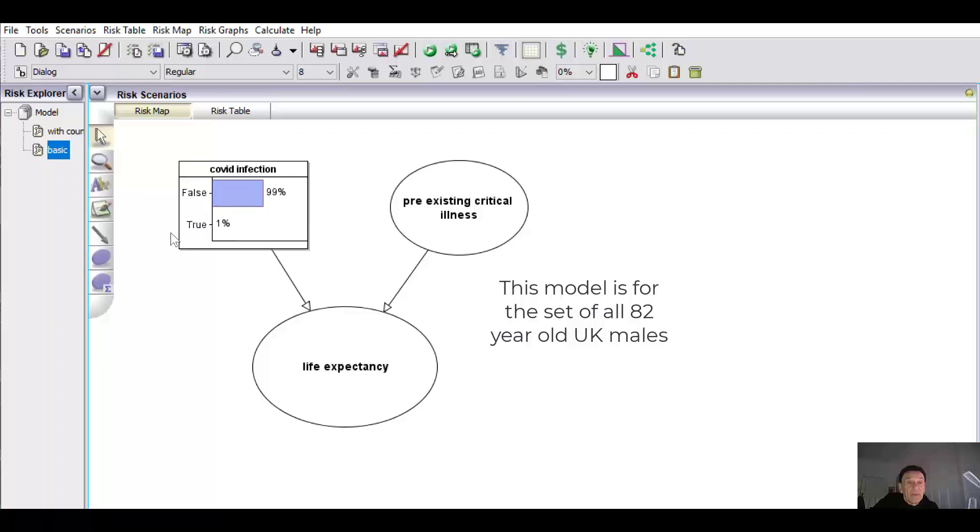So here we're assuming a prior probability of 1% for Covid infection, 10% pre-existing critical illness. And for this,